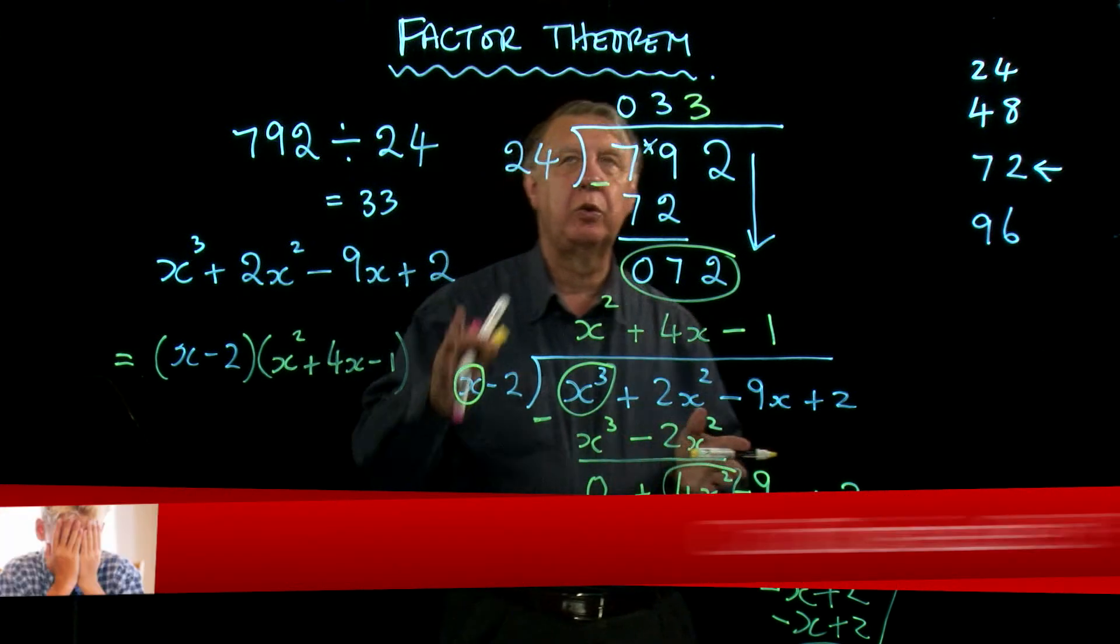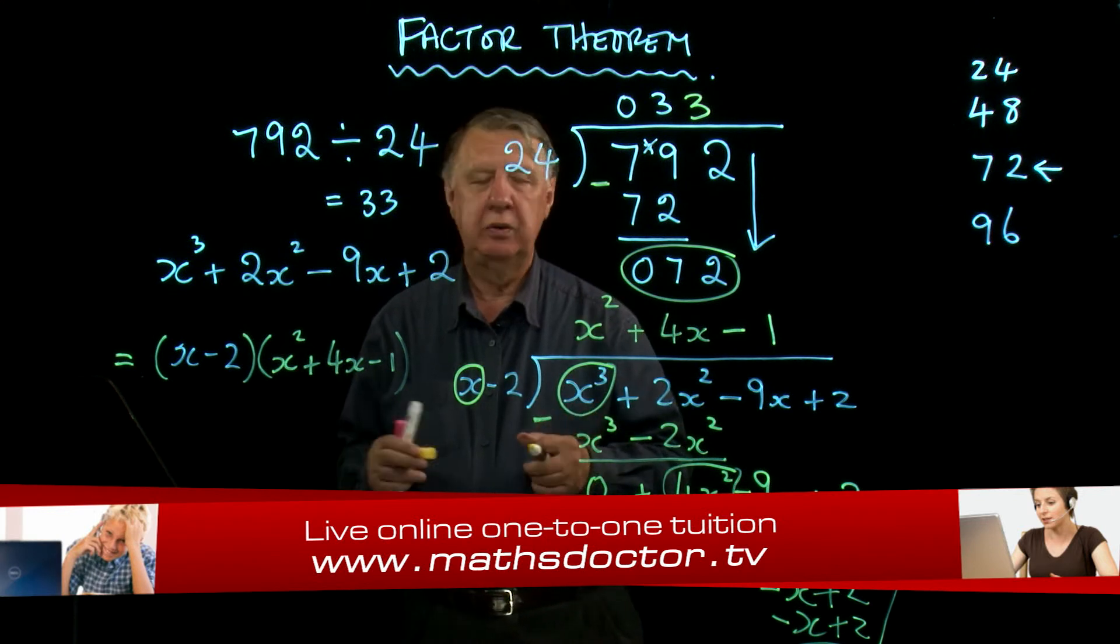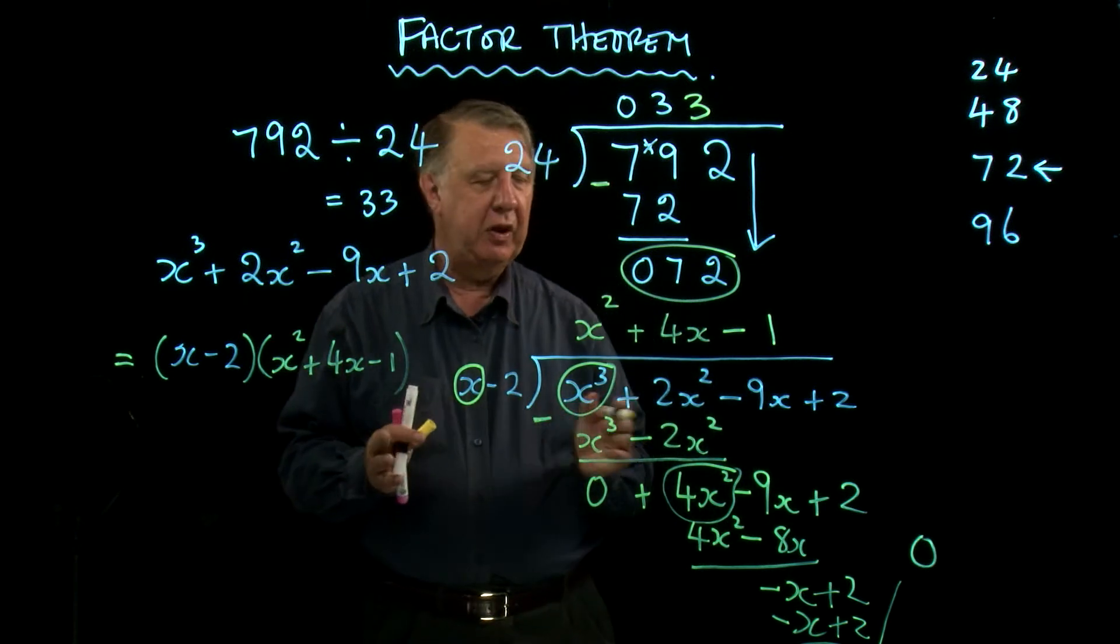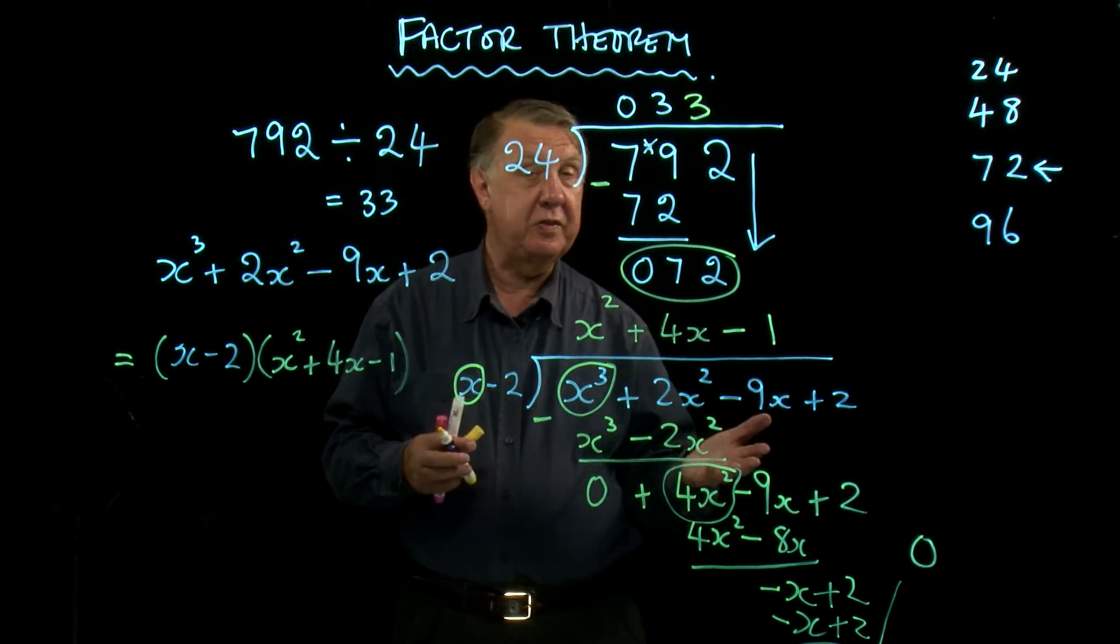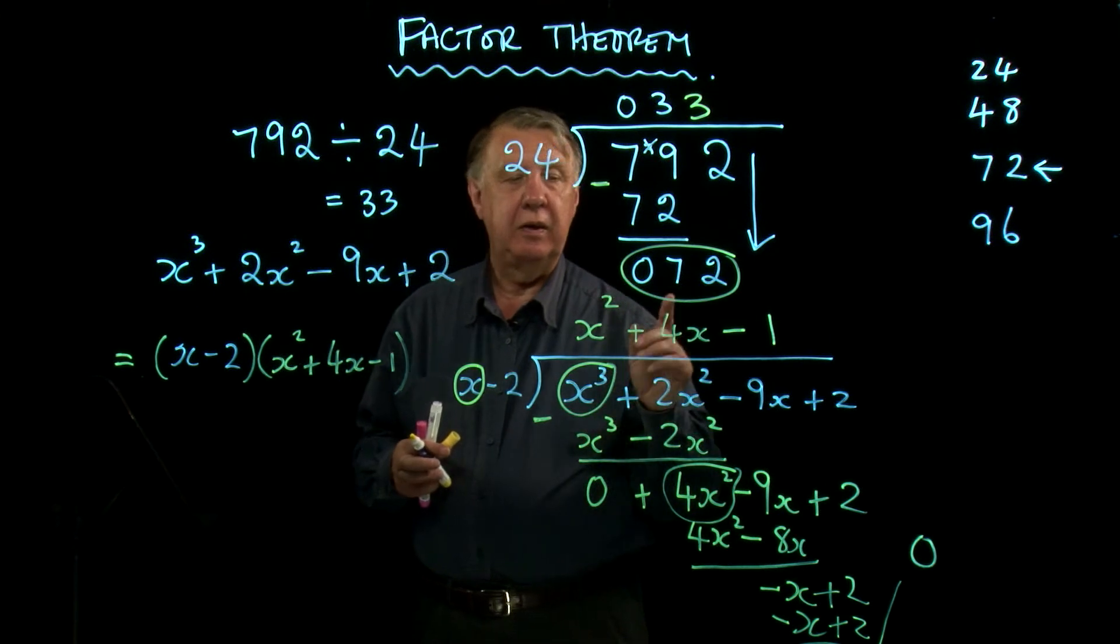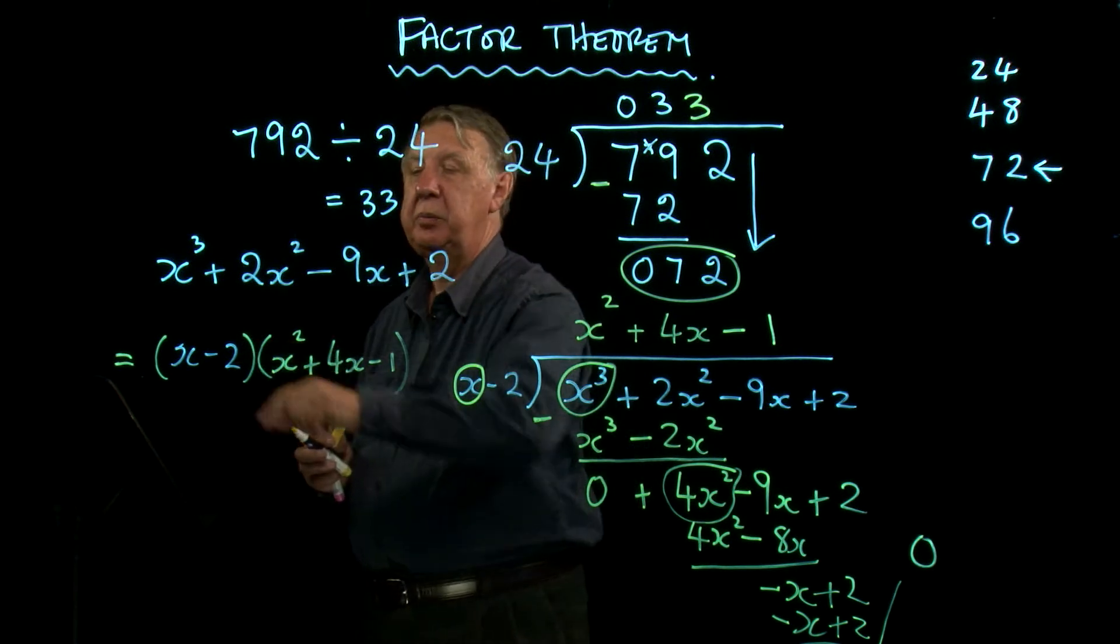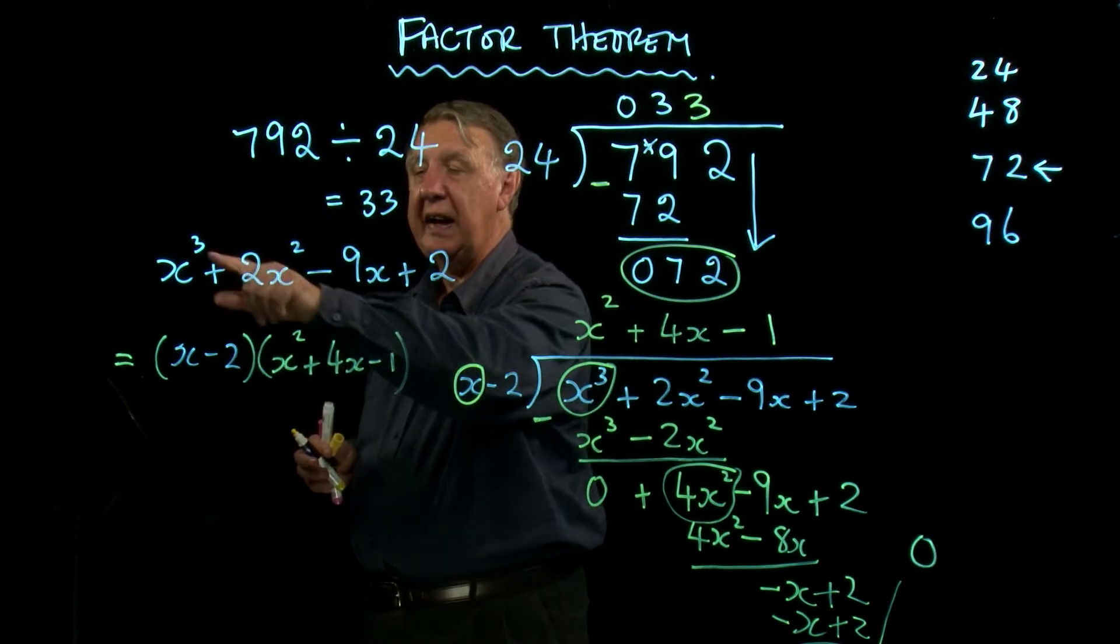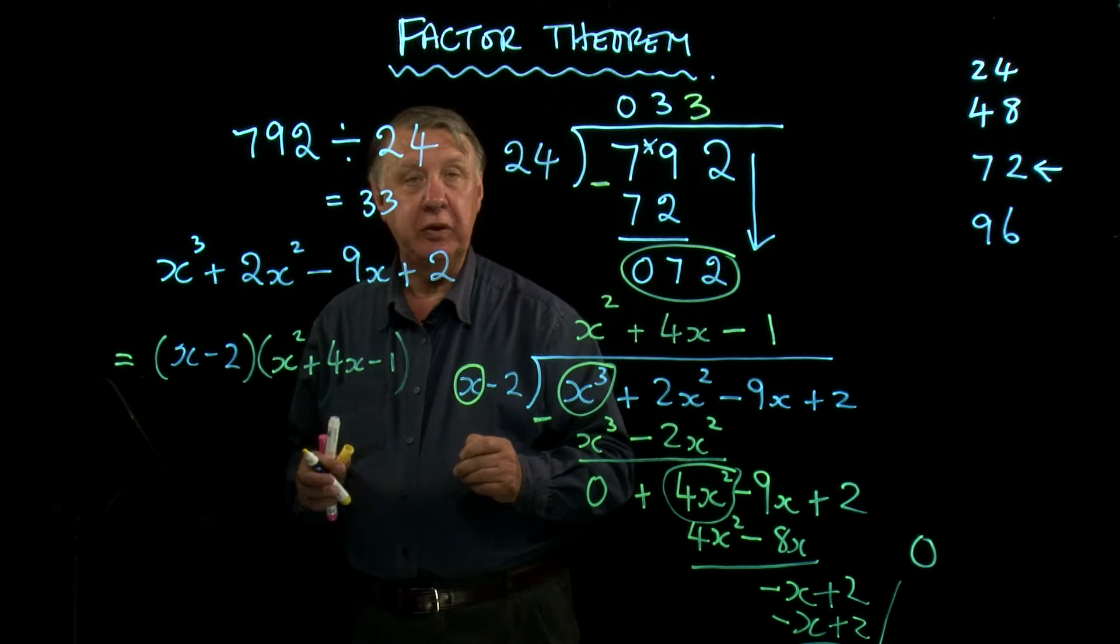So the first thing we need to learn in order to get towards this thing called the factor theorem is how to do this long division process. There are ways around it. Don't panic. If you don't like this, there is a way around it, as I'll show you later. But the syllabus says very specifically that you have to know how to do this method. Now, the next question that we're going to answer is how did I spot that x - 2 did actually go into that expression?